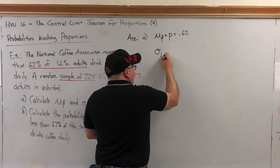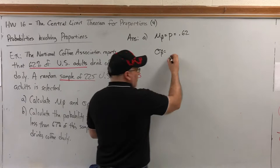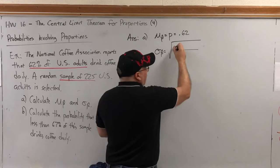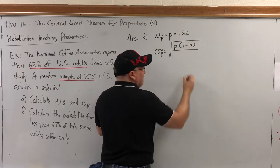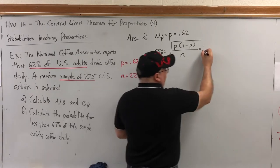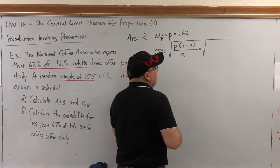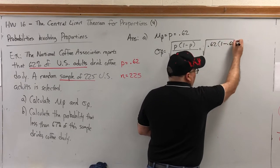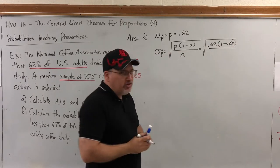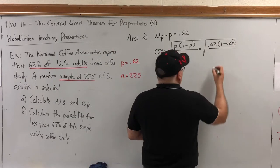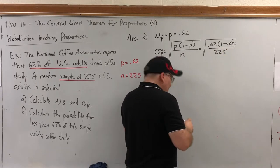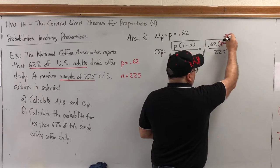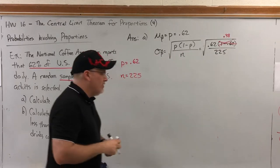Now σ sub P-hat requires some calculations because its formula is a tall square root with a fraction. Everything is under the square root. The numerator is P times the quantity 1 minus P, and the denominator is n. So if we just substitute our values, P is 0.62, 1 minus P is 0.38, and it might be prudent to figure out the subtraction problem first. And n is still 225. Let me go ahead and replace this subtraction problem with its answer, 0.38. It is still inside the square root even though I wrote it above.